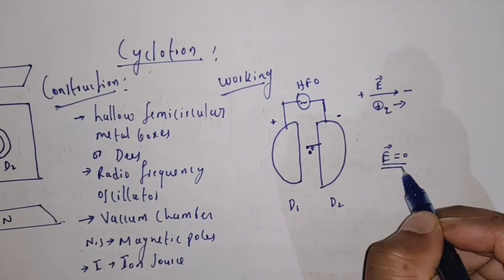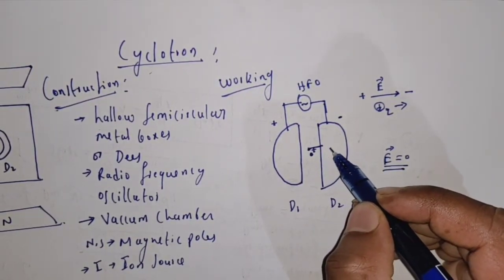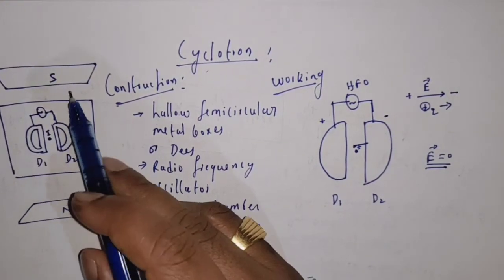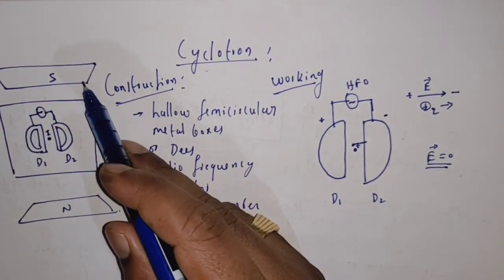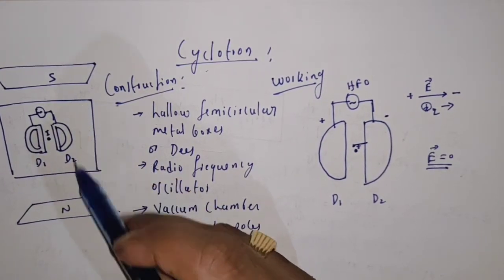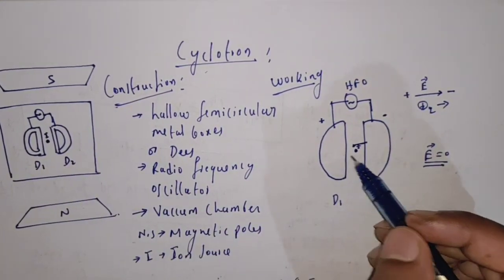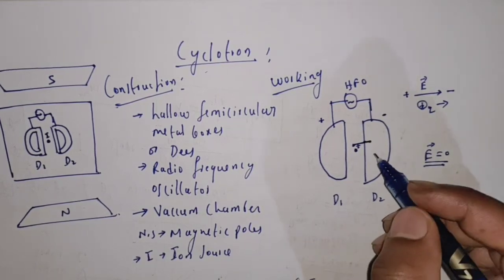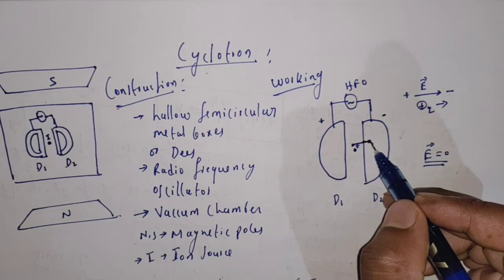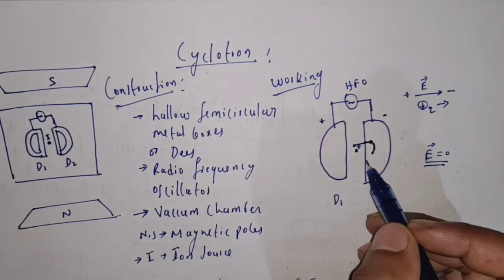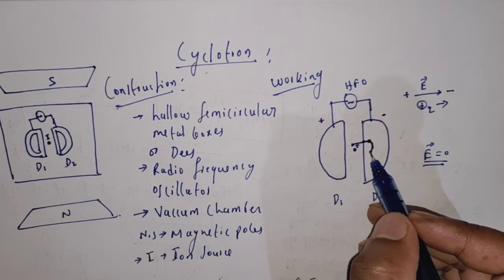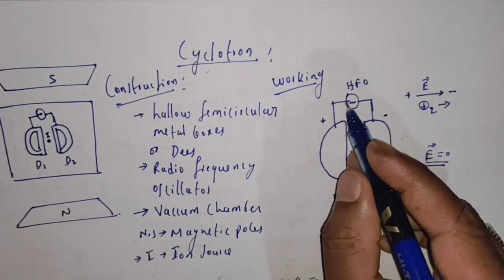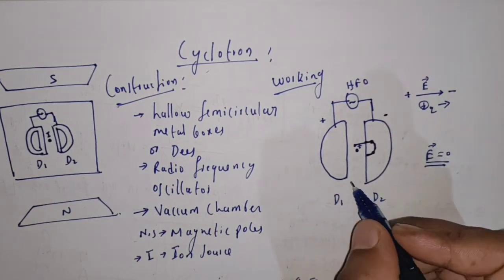When the positive ion enters into D2, since D2 is a hollow semicircular metal box, the electric field inside is zero, so the positive ion moves with constant velocity. The magnetic poles produce a magnetic field perpendicular to the two D's, and because of this, when the positive ion moves inside D2, it bends slightly and changes its direction.